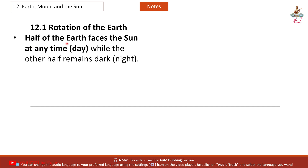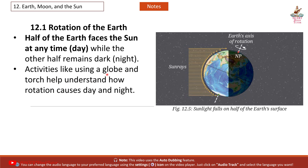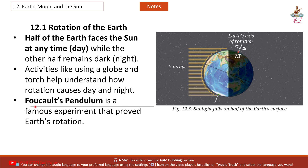Half of the earth faces the sun at any time — day — while the other half remains dark — night. Activities like using a globe and torches help understand how rotation causes day and night. Foucault's Pendulum is a famous experiment that proved Earth's rotation.